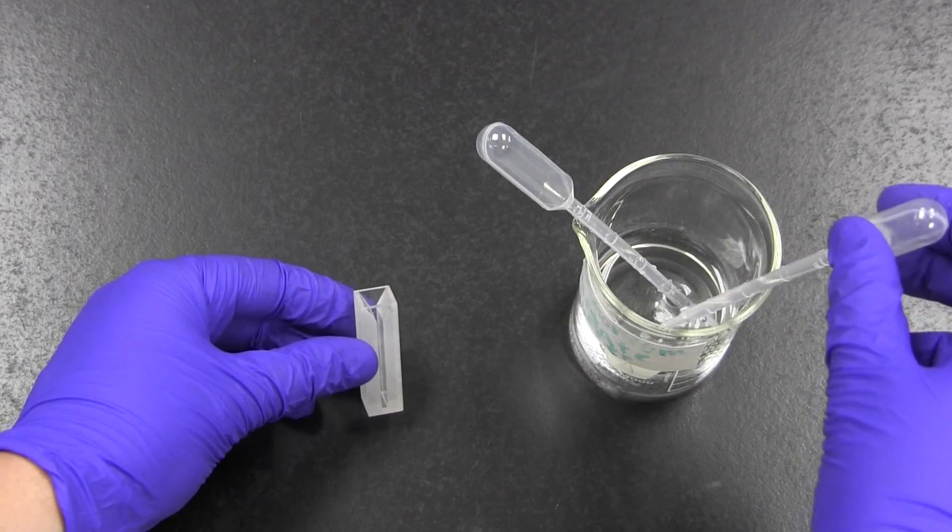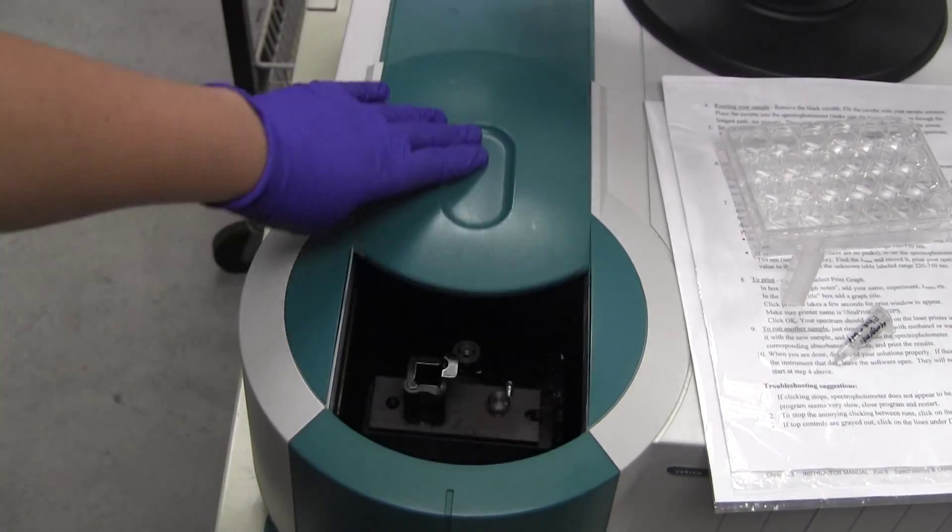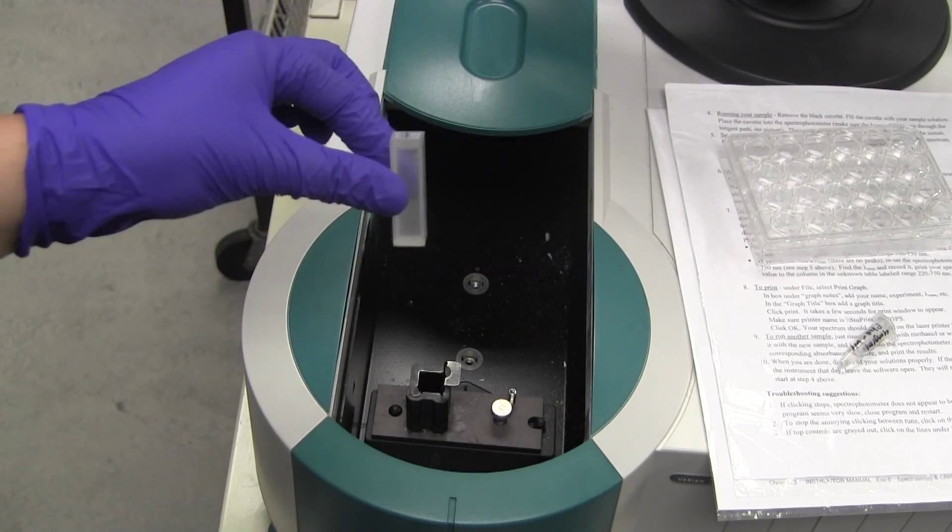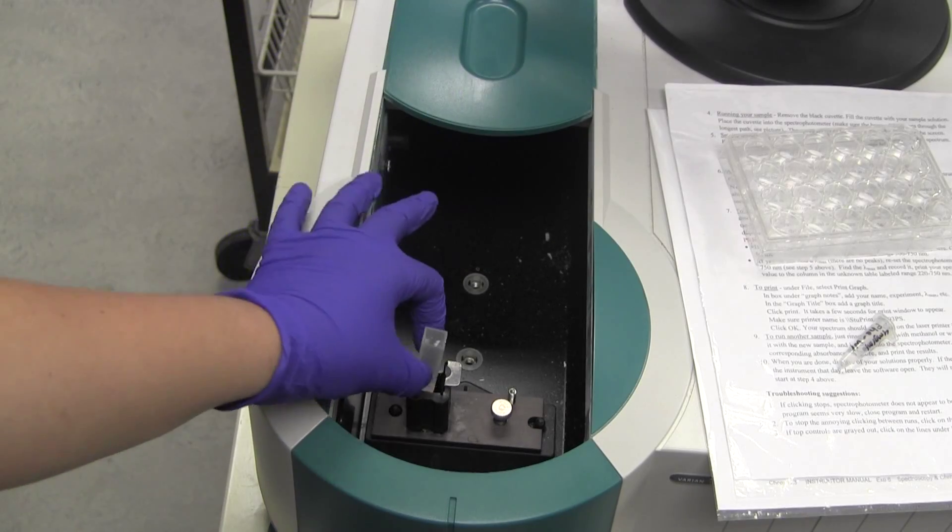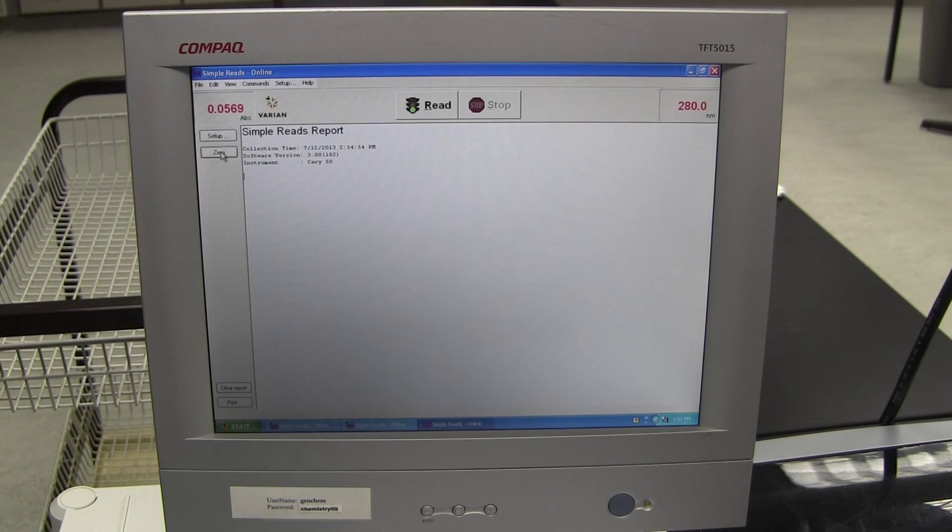To zero the instrument, fill a cuvette with the plain buffer and place it into the instrument. Make sure that the clear channel is facing the path of the light. Close the instrument and press the zero button. Some people choose to press this a couple times.